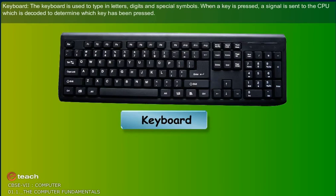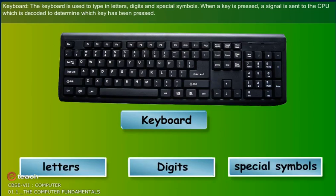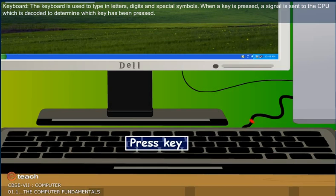Keyboard: The keyboard is used to type in letters, digits and special symbols. When a key is pressed, a signal is sent to the CPU, which is decoded to determine which key has been pressed.